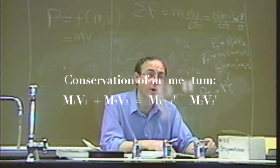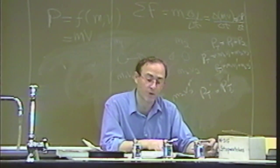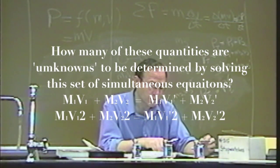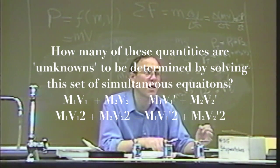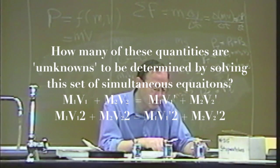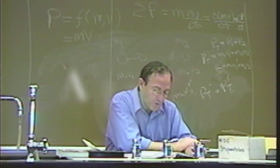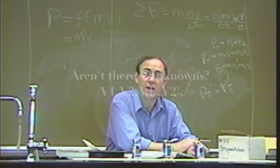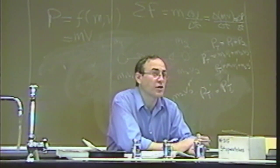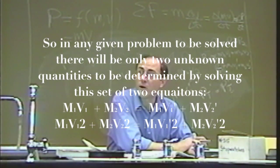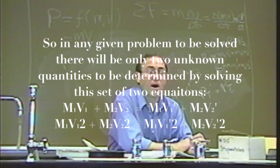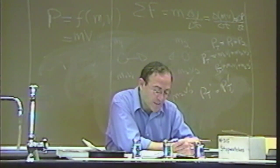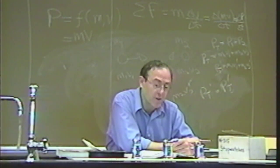From conservation of momentum, we write down the momentum conservation law: M1 V1, exactly as before. From conservation of energy, we write down exactly what we said. How many unknowns do we have? Assuming M1 and M2 are known constants, V1 prime and V2 prime are unknown — that's two unknowns. Usually you'll know either the initial speeds or the final speeds. You have two unknowns and two equations, so you can solve for them. If we know the masses and initial velocities, we can solve for V1 prime and V2 prime.